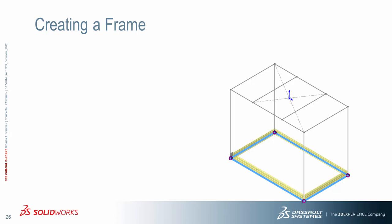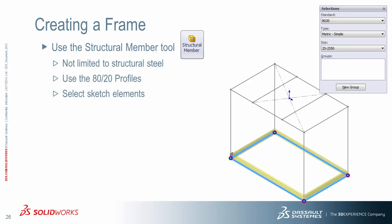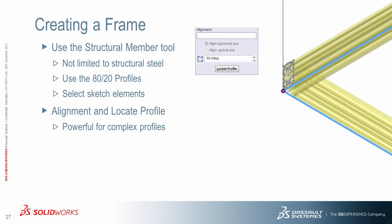Let's go about creating the actual frame itself. The first thing you want to do is use the Structural Member tool. When you do this in the Property Manager, you get a series of pull-downs. The first one is your standard — in this case, I named the folder after the company, 8020. Then choose the type of profiles: simple profiles like we created, detailed ones with all the fillets, and then the size. Keep in mind that your profiles aren't limited to structural steel. All that's left is to select the sketch elements you'd like to add structural members to — in this case, the bottom rectangle. Simply select around the side, and then make sure you align the profile in the correct orientation.